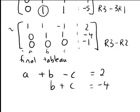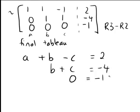Now look at the last row: 0a plus 0b plus 0c equals negative 1. In other words, 0 equals negative 1. Does it? Of course not. That is a nonsense statement. So because we have come up with a nonsensical statement, it actually means that the system of equations have no consistent solution.